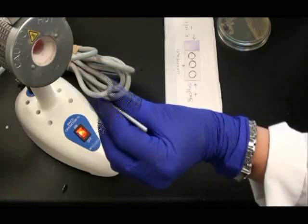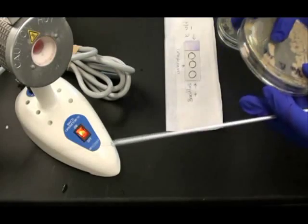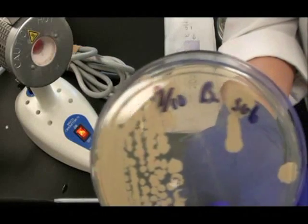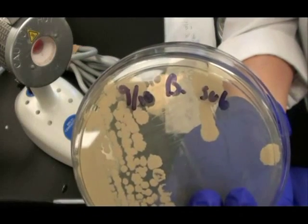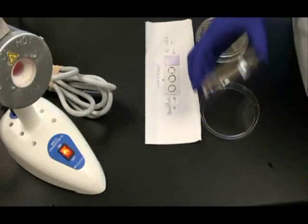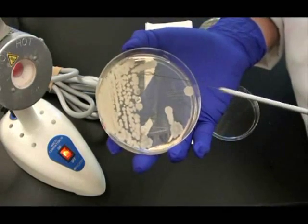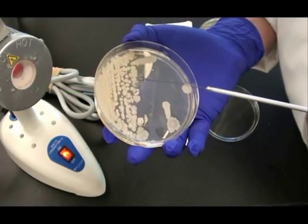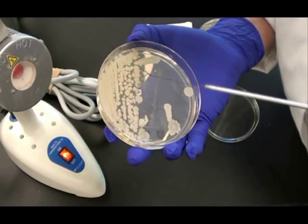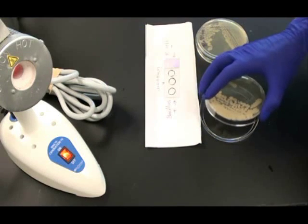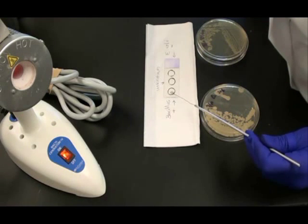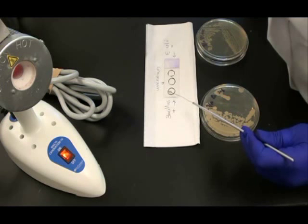Now I sterilize my loop. I do this between each step, 5 to 10 seconds, then allow it to cool. Then I will be obtaining my positive endospore control, endospore producer Bacillus subtilis. I take the cooled sterile inoculation loop and run it across a colony of B. sub. Then I mix that sample into the water in the circle on the right side of the slide.